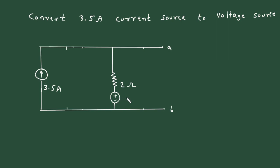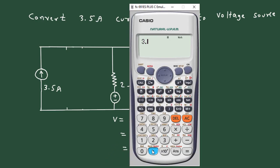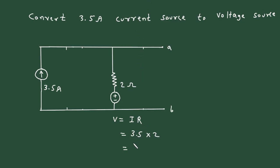Here this will be negative on the lower side. According to Ohm's law, V is equal to I into R. The value of current is 3.5 multiplied by the resistance value of 2. So this will be 3.5 multiplied by 2, which is 7. It will be 7 volt.